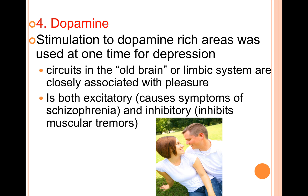Like most neurotransmitters, dopamine is both excitatory and inhibitory. For instance, it causes symptoms of schizophrenia, and it inhibits muscular tremors. So if you try to treat schizophrenia by lowering dopamine, you might get side effects like muscular tremors. Most psychiatrists and physicians are well-versed in these neurotransmitters and the use of drugs to shift their levels, and they work with patients to maximize benefits and minimize side effects.